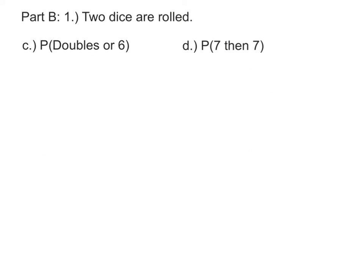To find the probability of getting doubles or a 6, let's think of all the ways we can get doubles: 1 and 1, 2 and 2, 3 and 3, 4 and 4, 5 and 5, or 6 and 6.